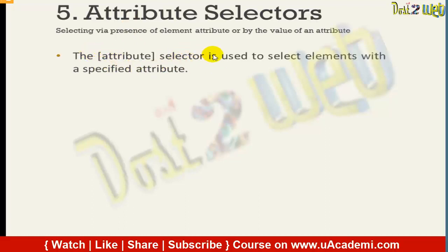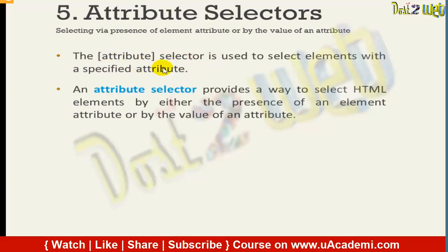The attribute selector is used to select elements with the specified attribute. Whichever specified attribute you are going to use, then you are going to use the attribute selector. It provides a way to select an HTML element by either the presence of an element attribute or by the value of an attribute.